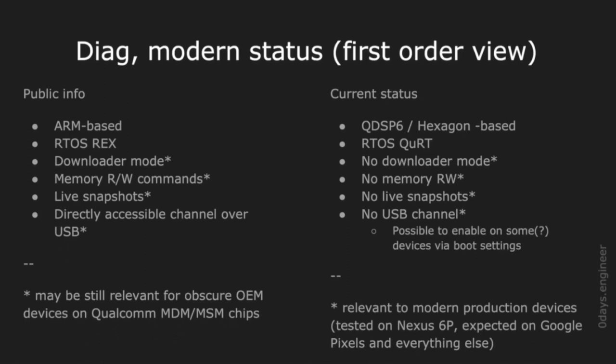These observations were based on my test device Nexus 6P, which represents around a medium level of hardening. More modern devices such as the latest Google Pixels should be expected to be even more hardened. On the other side of the spectrum, no-name modem sticks can be more open and easier to investigate.